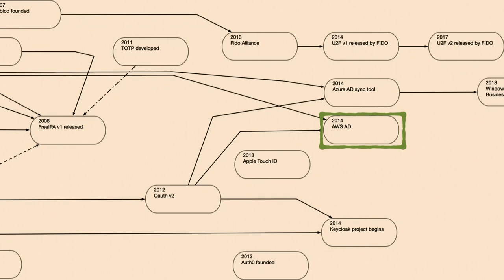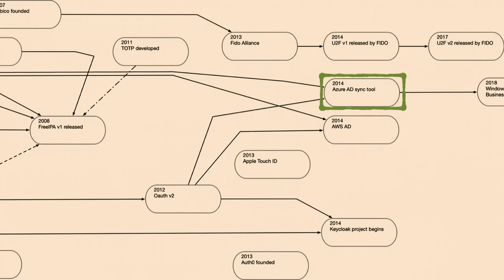2014 sees a lot more movement toward cloud identity. Amazon releases their Active Directory instance in the cloud, and Azure also releases their AD synchronization tool. Remember what we said about Server 2003 being everywhere? This matters. Azure releasing an AD sync tool is them offering a bridge from on-premise to cloud-based auth — this is where we start to see people starting to offer pathways to get to off-site authentication and doing that synchronization and replication.